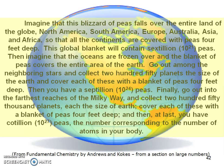Imagine this blizzard of peas falls over the entire land of the globe — North America, South America, Europe, Australia, Asia, and Africa — so that all continents are covered with peas four feet deep. This global blanket would contain six trillion, 10 to the 21st peas. Then imagine the oceans are frozen over and the blanket covers the entire Earth. Going among the neighboring stars, collect 250 planets the size of Earth and cover each with a blanket of peas four feet deep — then you finally have a septillion peas. Go into the farthest reaches of the Milky Way and collect 250,000 planets each the size of Earth, cover each with a blanket of peas four feet deep, and at last you will have a cotillion — 10 to the 27th peas — the number corresponding to the number of atoms in your body.